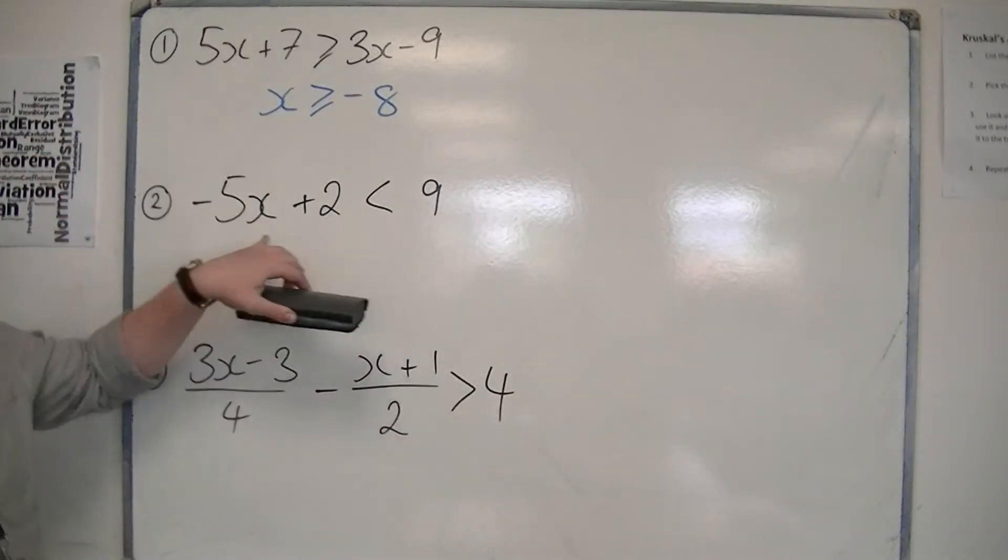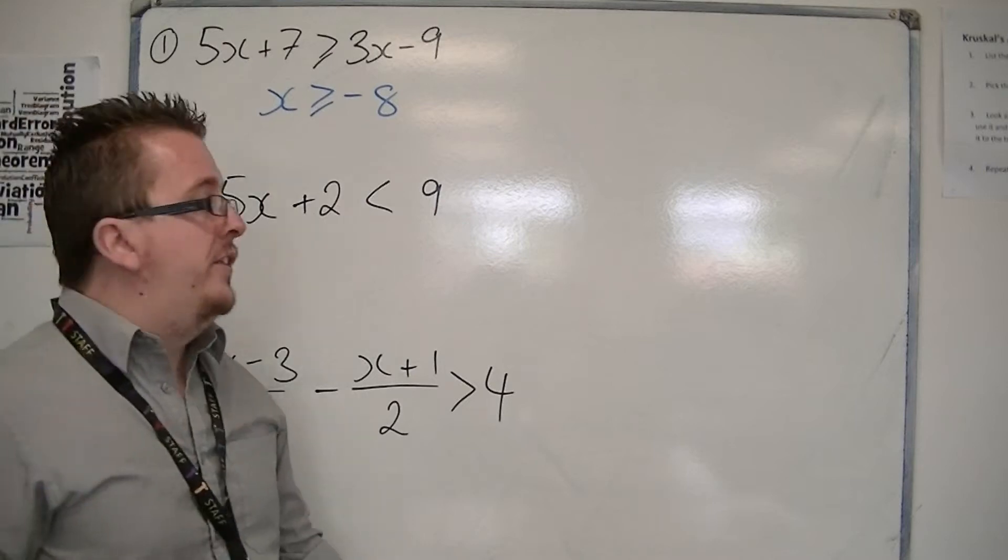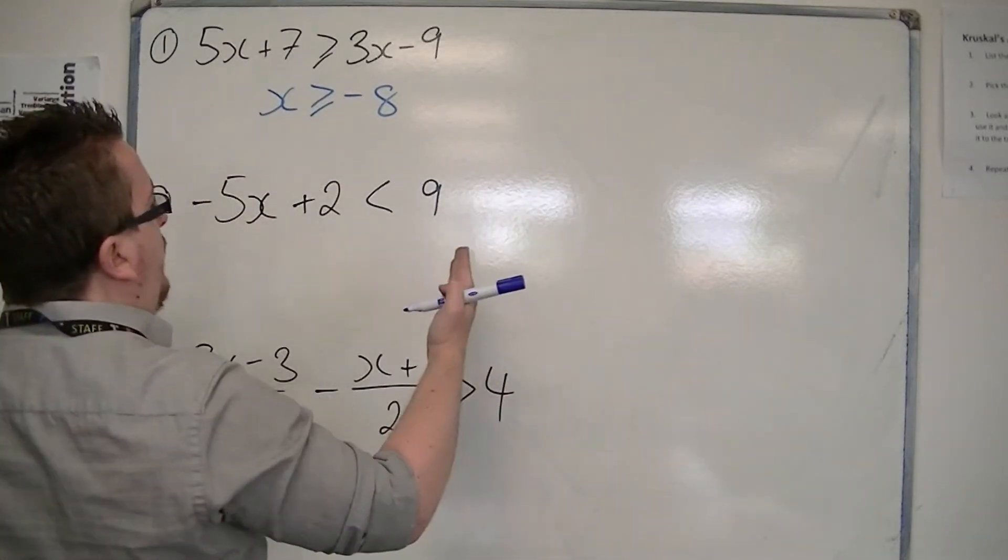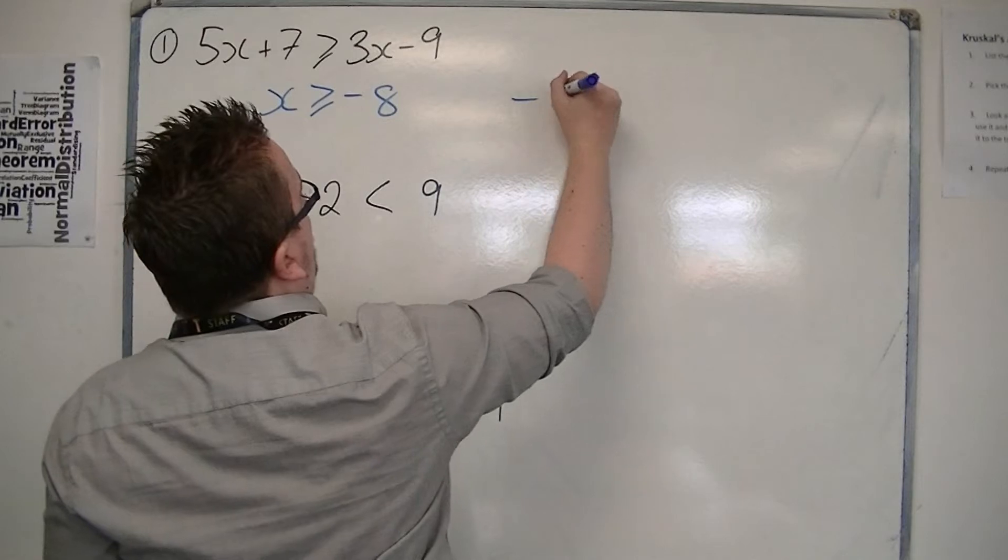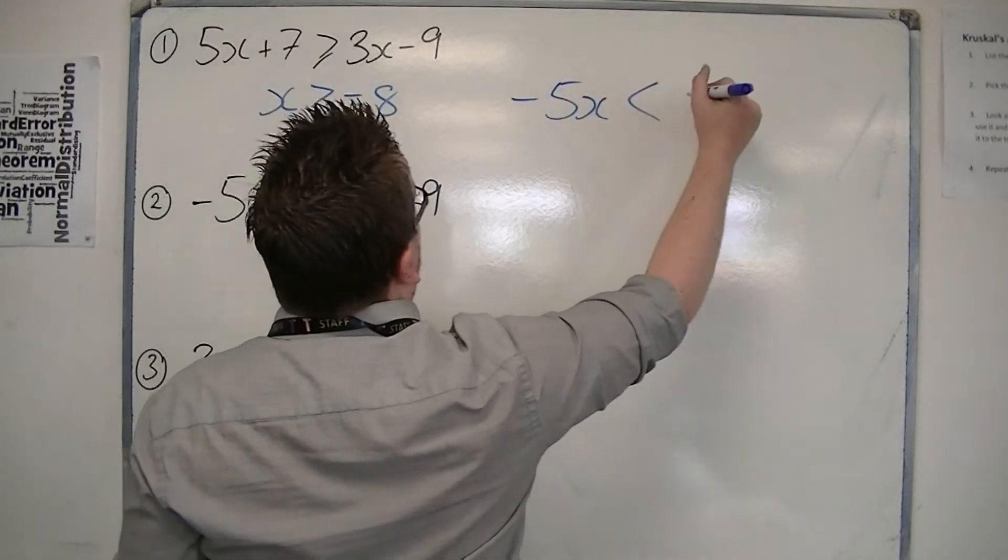The second problem: minus 5x plus 2 is less than 9. I'll take 2 from both sides first, so we get minus 5x is less than 7.